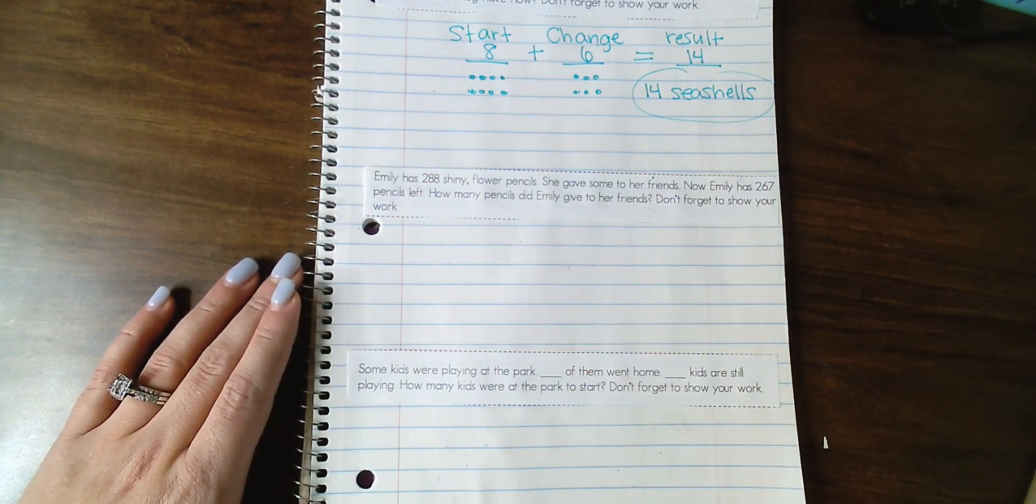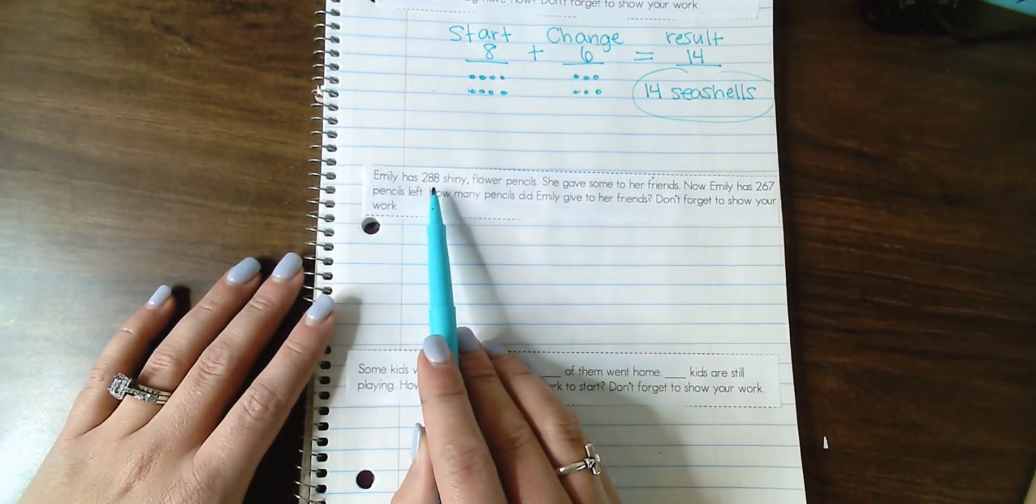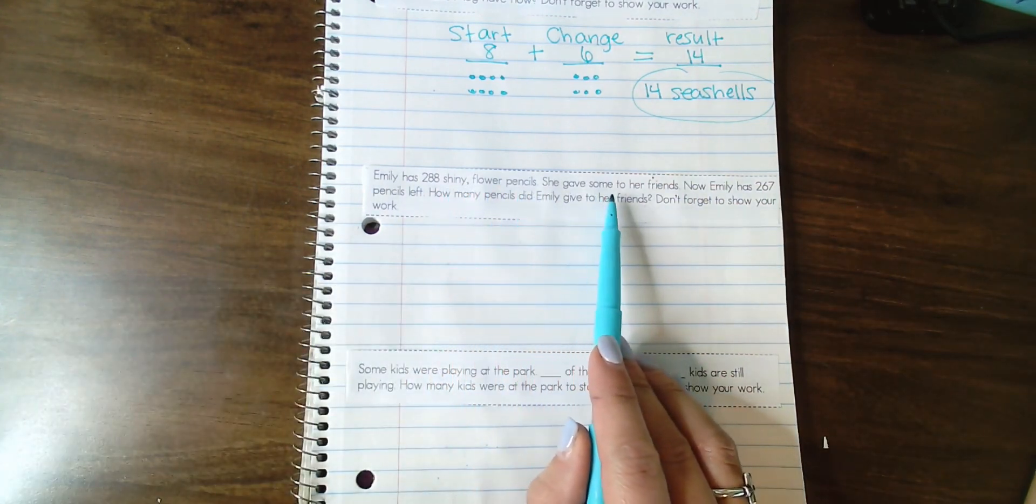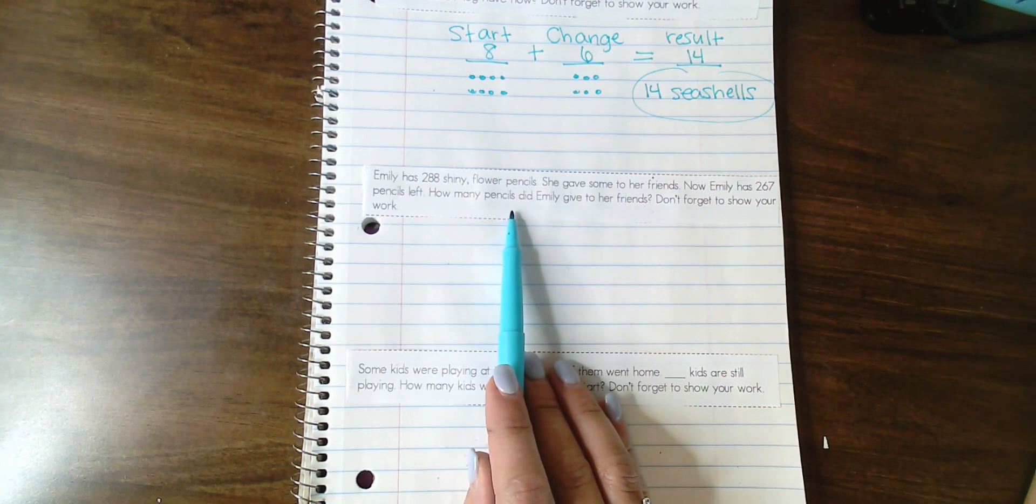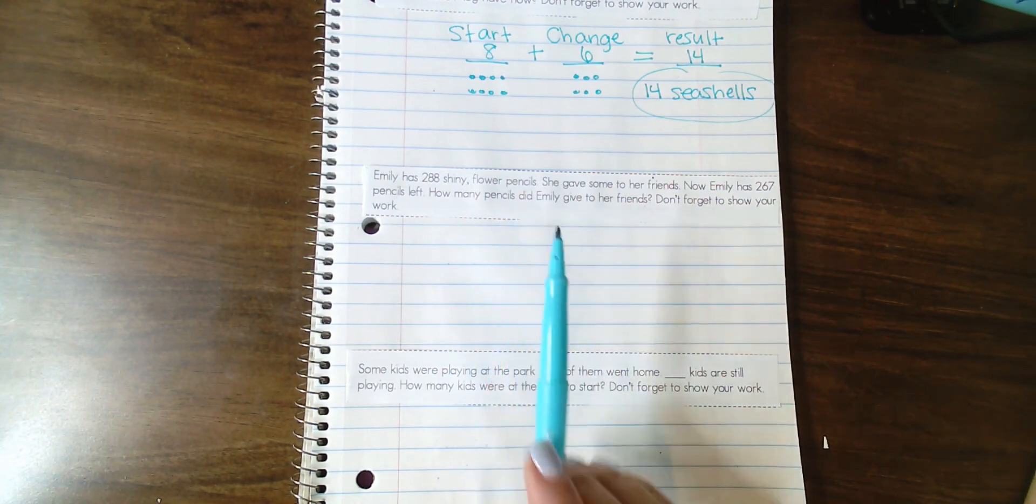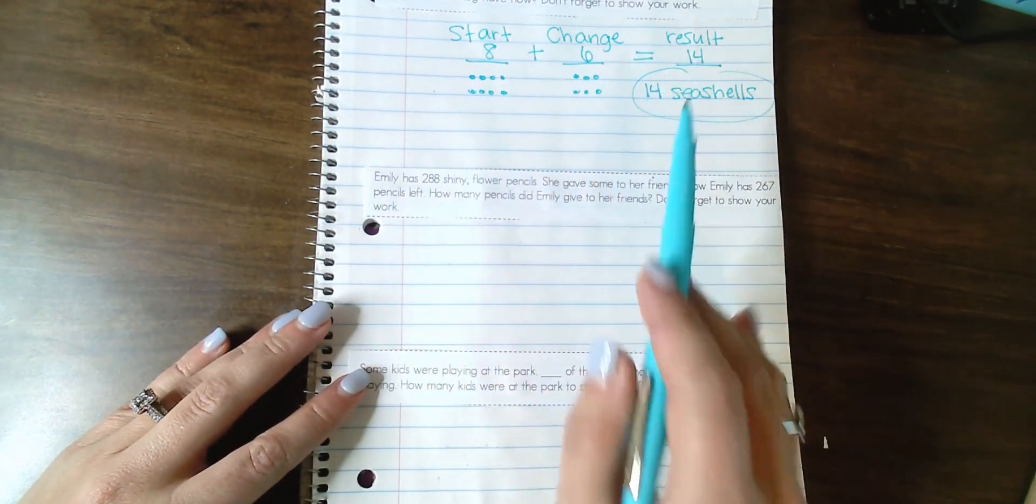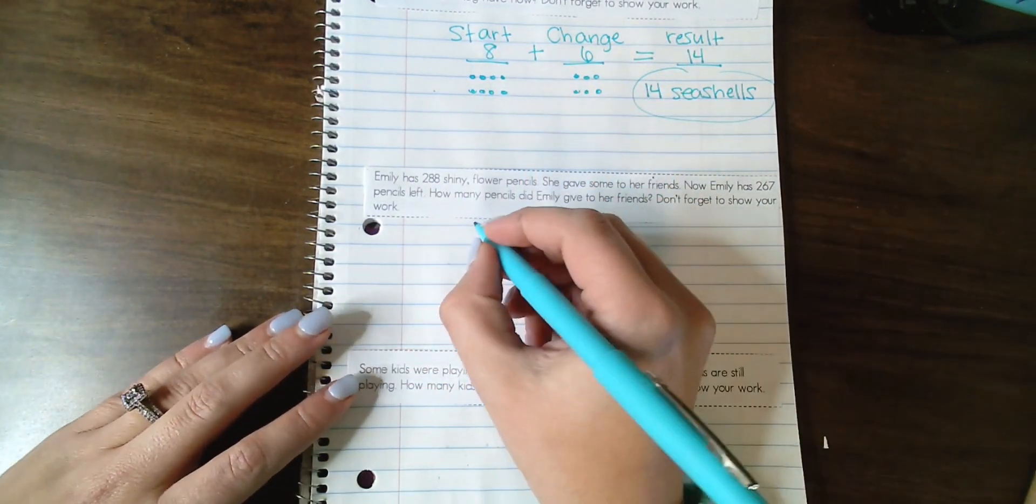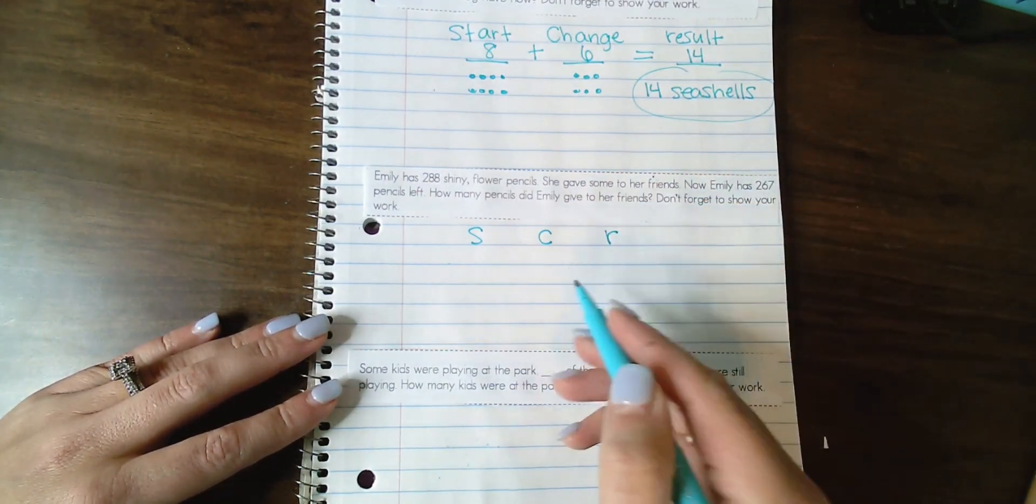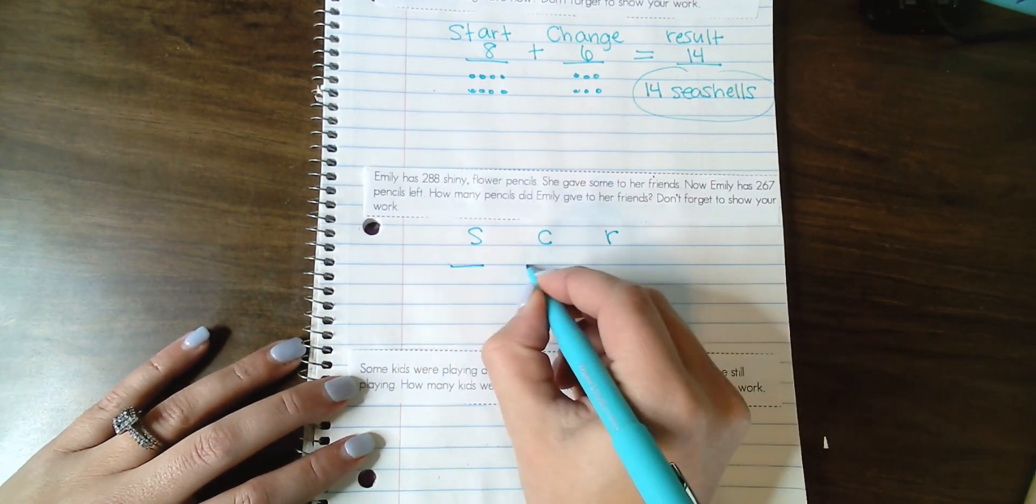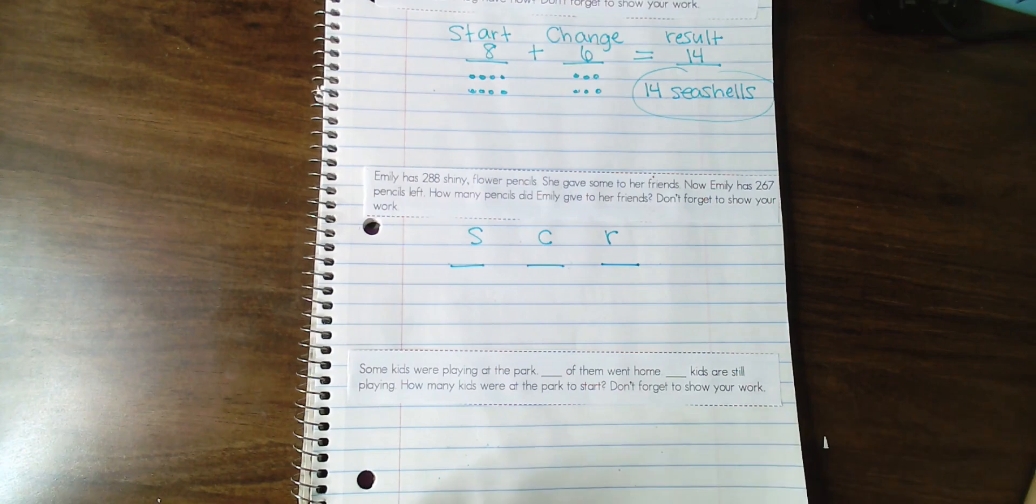Emily has 288 shiny flower pencils. She gave some to her friends. Now Emily has 267 pencils left. How many pencils did Emily give to her friends? You could have them write start, change, result. If they've been doing this for a while, sometimes I will just let them write S for start, C for change, and R for result. Then underneath, we are going to draw our three blanks because we do not know if this is addition or subtraction yet. I want to talk out what's happening in the problem in order for them to figure out what operation is being used.